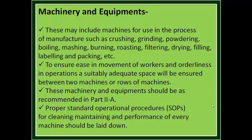Machinery and equipment may include machines for use in the process of manufacture such as crushing, grinding, powdering, boiling, smashing, burning, roasting, filtering, drying, filling, labeling, and packing. To ensure ease of movement and orderliness in operations, a suitably adequate space will be ensured between two machines or rows of machines. These machines and equipment should be as per recommendations in Part 2 of this guideline. Proper Standard Operating Procedures for cleaning, maintaining, and performance of every machine should be laid down.